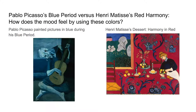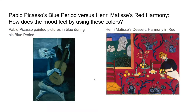Picasso painted this painting blue on one side, and Matisse's painting is red — what are the kinds of feelings that you get from both of these paintings? You can discuss that with your parent as you look at both these paintings together.